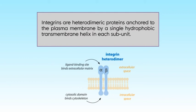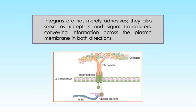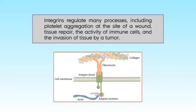Now let us look at cell-cell interaction. Several families of integral proteins in the plasma membrane provide specific points of attachment between cells or between a cell and extracellular matrix proteins. Integrins are heterodimeric proteins anchored to the plasma membrane by a single hydrophobic transmembrane helix in each subunit. The large extracellular domains of the two subunits, alpha and beta, combine to form a specific binding site for extracellular proteins such as collagen and fibronectin. Integrins are not merely adhesives — they also serve as receptors and signal transducers, conveying information across the plasma membrane in both directions, and they regulate many processes including platelet aggregation at the site of a wound, tissue repair, the activity of immune cells, and the invasion of tissue by a tumor.